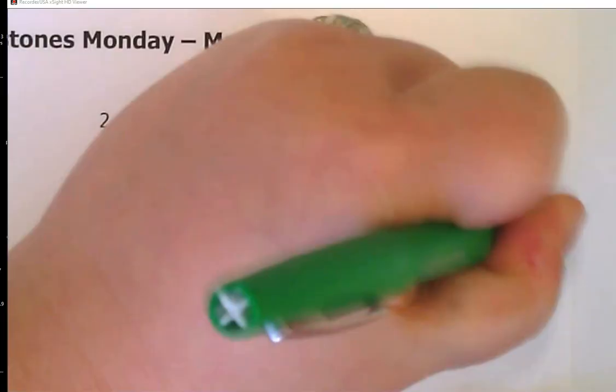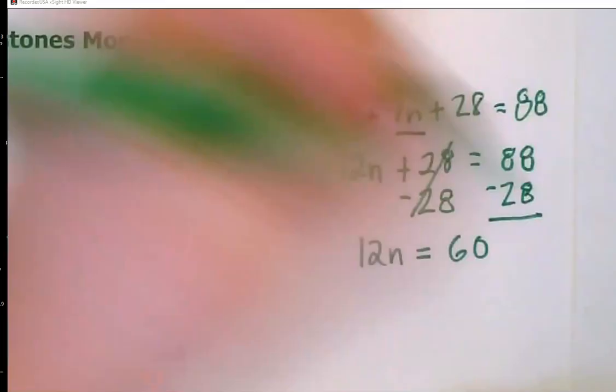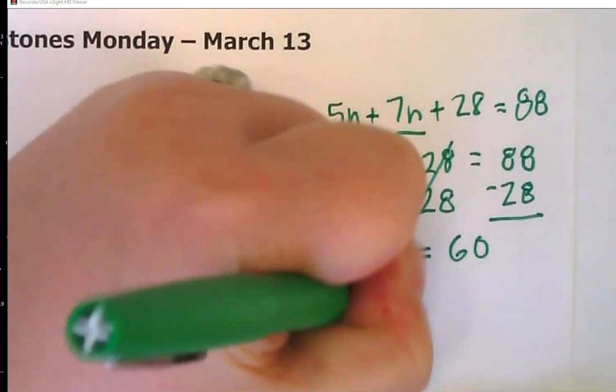Now I just have a one-step equation, so I can divide both sides by 12. So my n is going to equal 5. So my correct answer is A, 5.